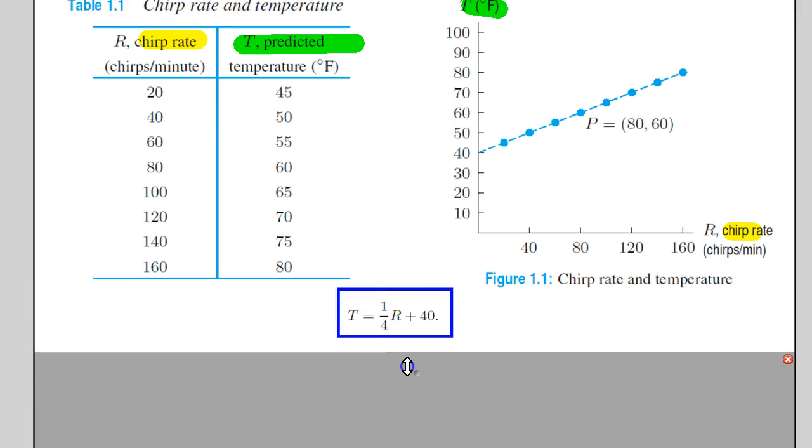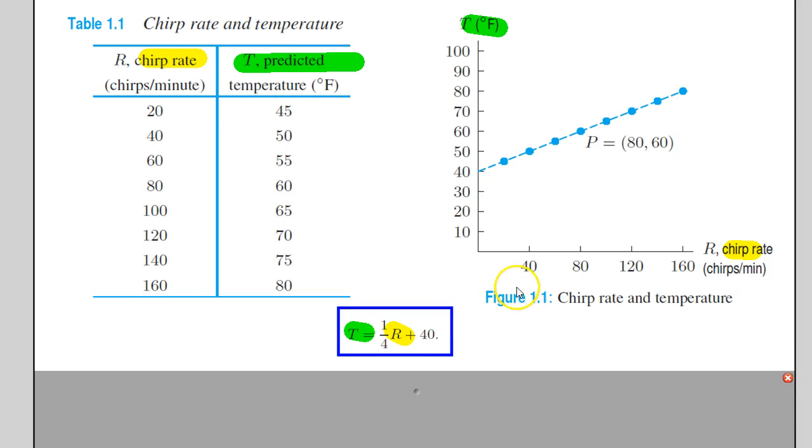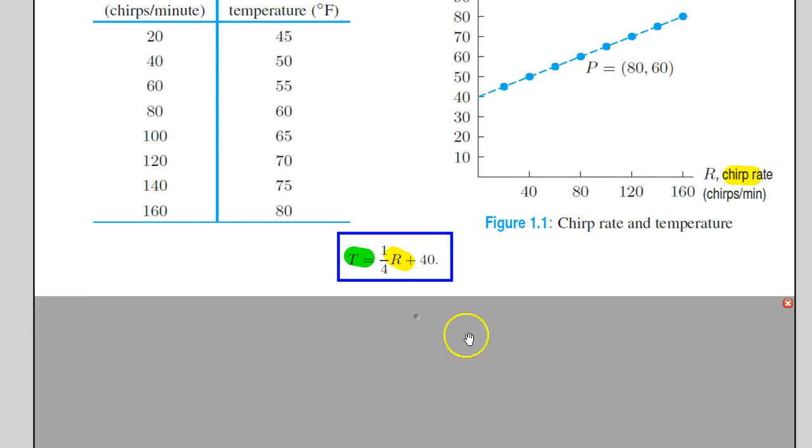And then we have a formula that represents the relationship between the chirp rate and the temperature. So, all of these are examples of ways to describe the same special relationship which we have said is a function.